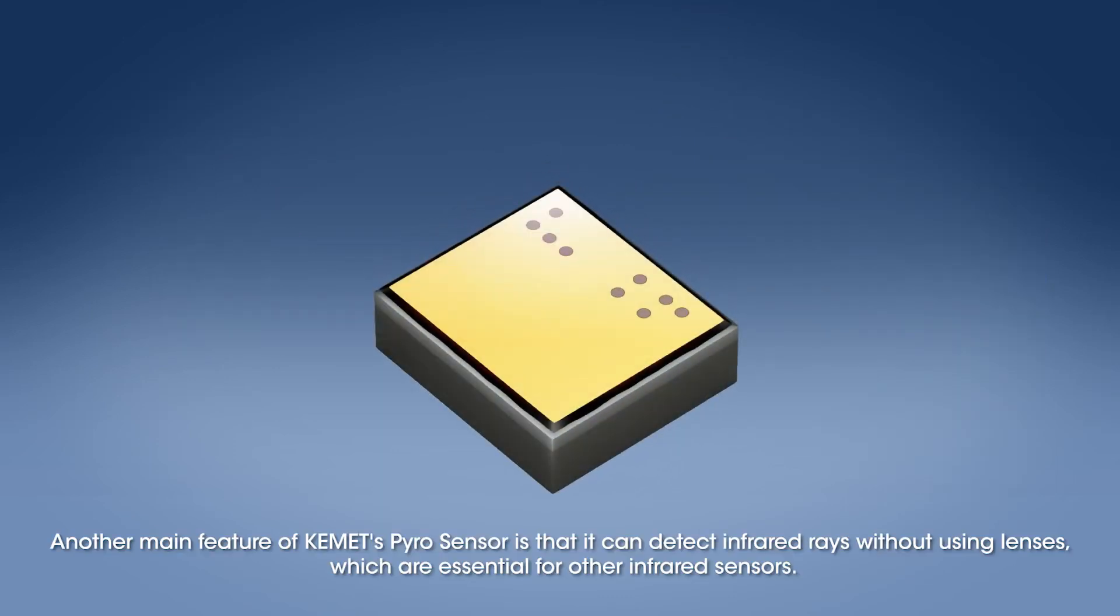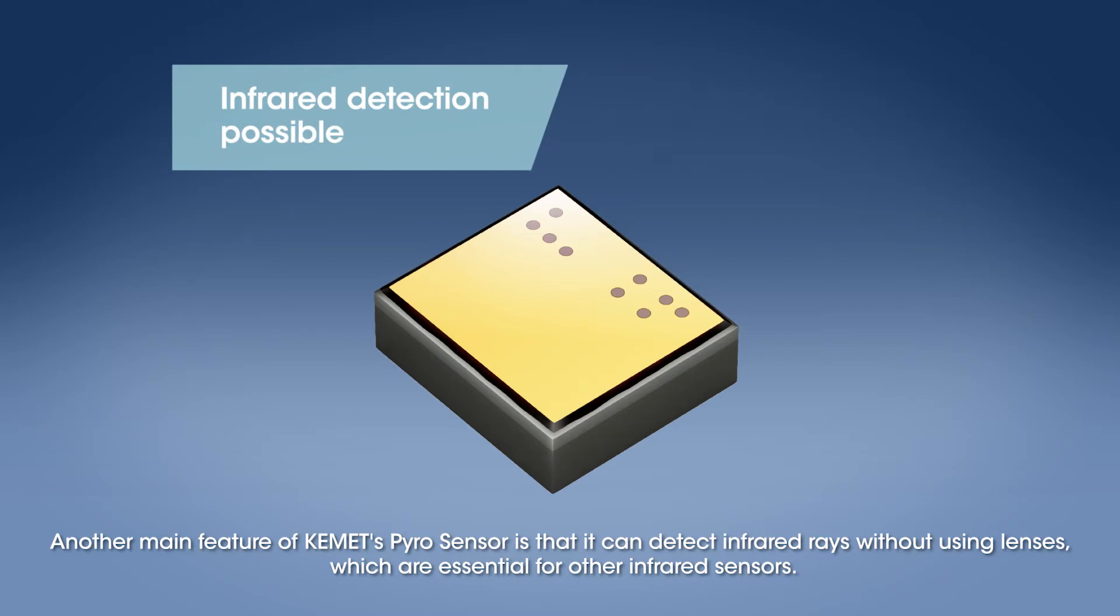Another main feature of KEMET's Pyro Sensor is that it can detect infrared rays without using lenses, which are essential for other infrared sensors.